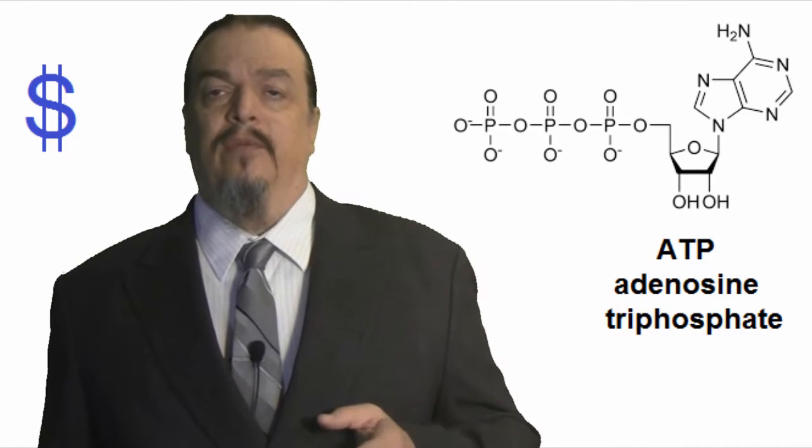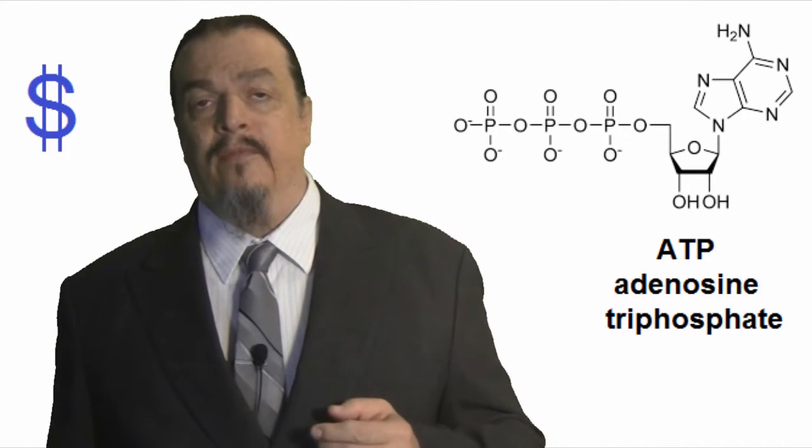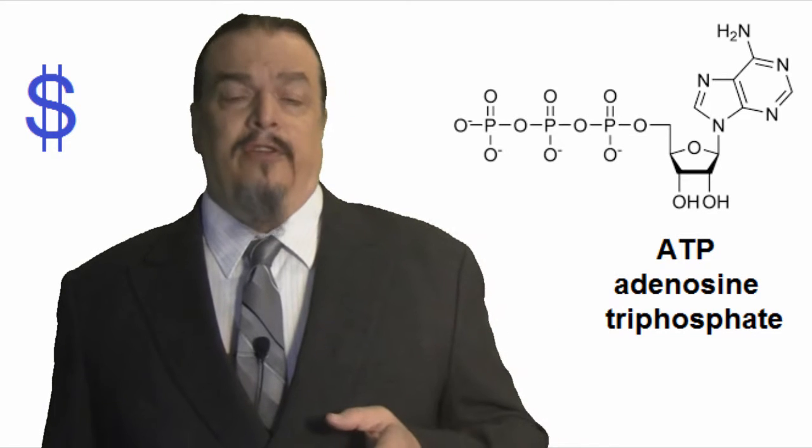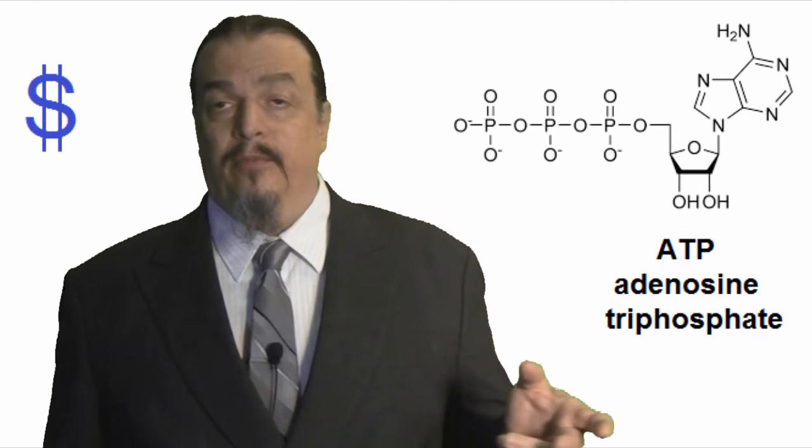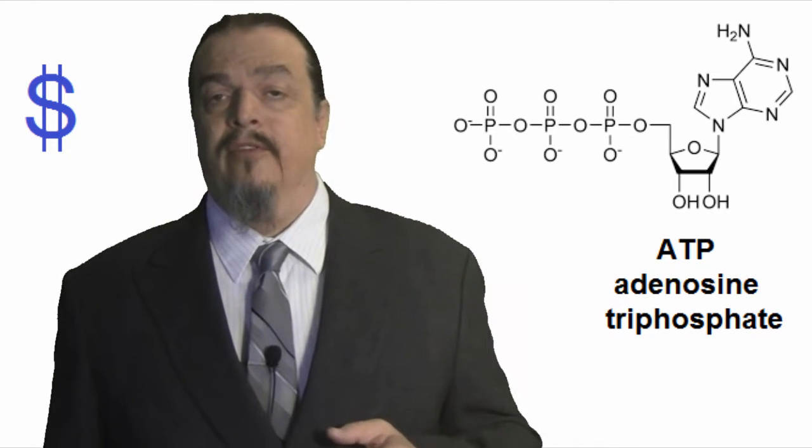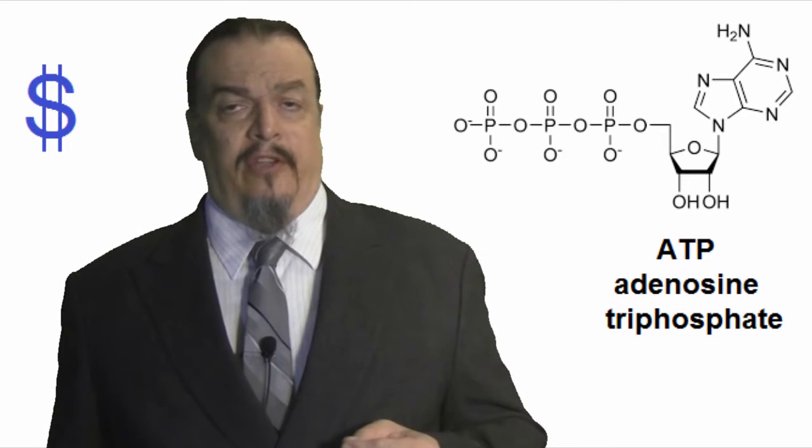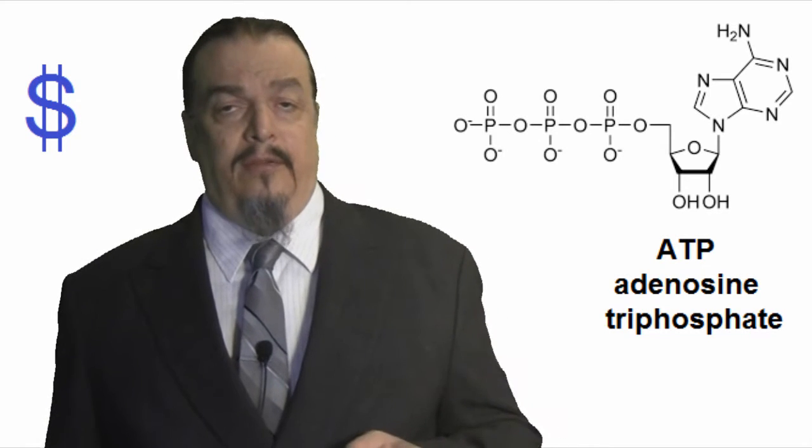This process is often described in terms of money or an economy. In the case of cellular respiration, the dollar that is circulating in the system is called ATP, which stands for adenosine triphosphate. It's a coenzyme that is often called the molecular unit of currency. It transports energy within a cell for metabolism. It's a key player in the cellular respiration economy, so keep that in your memory bank.